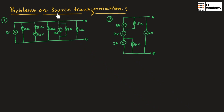In source transformation, the voltage source can be converted into current source and the current source can be converted into voltage source. Now let us consider the first problem. We are having both current sources as well as a voltage source.